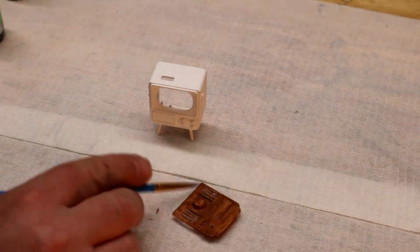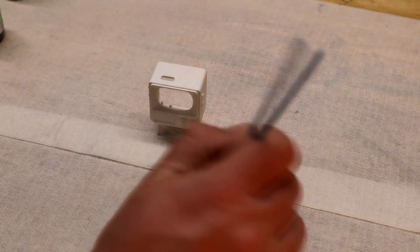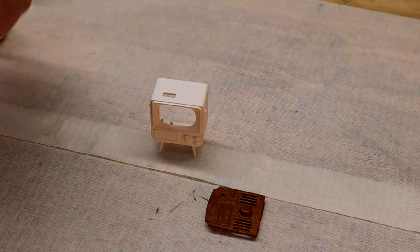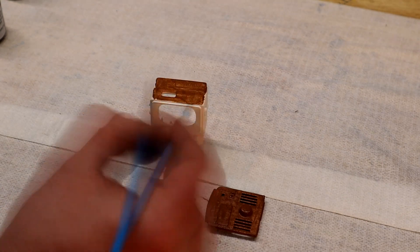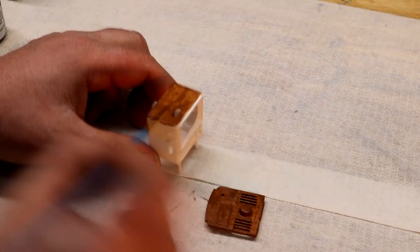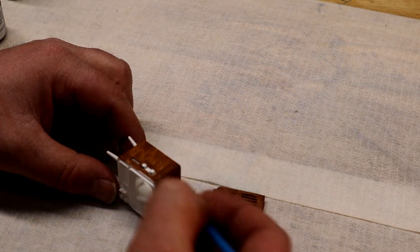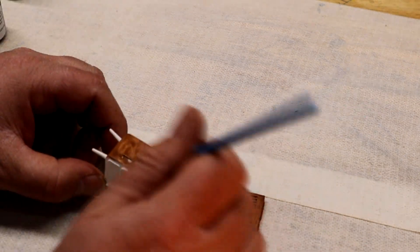And normally something like this, I would get my airbrush out and airbrush it, but I decided to use a brush because it's not that big, and also I wanted to do a little bit of a technique to try to simulate a little bit of wood grain, just to give it the kind of character and style.